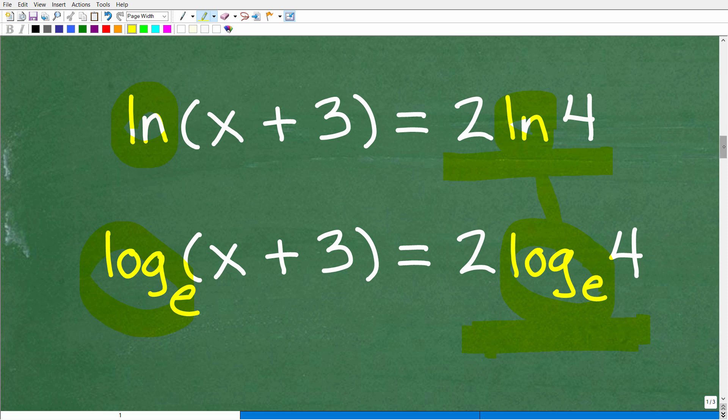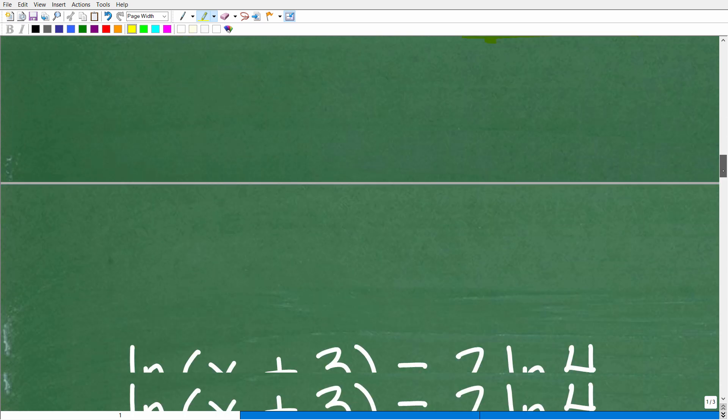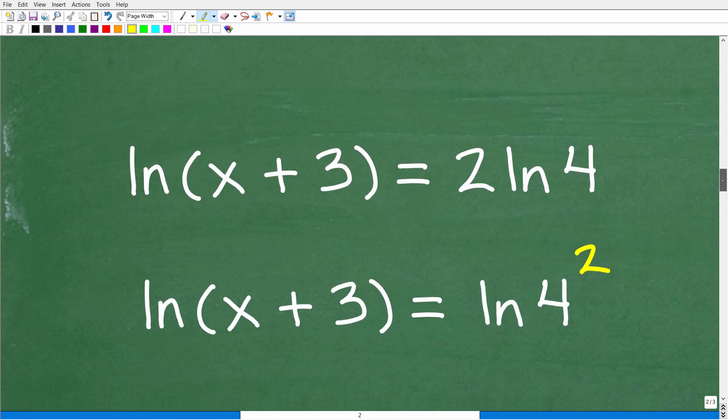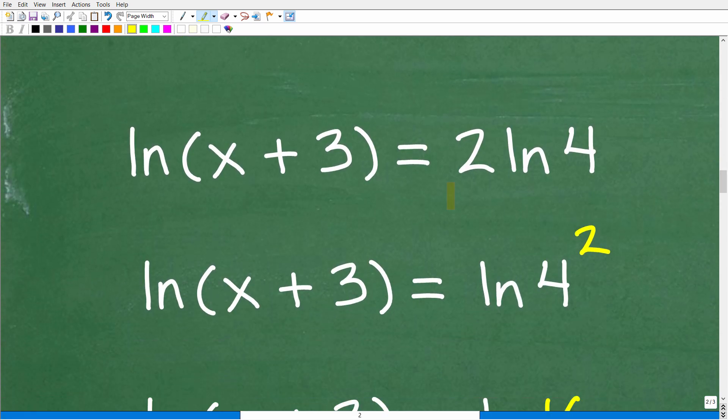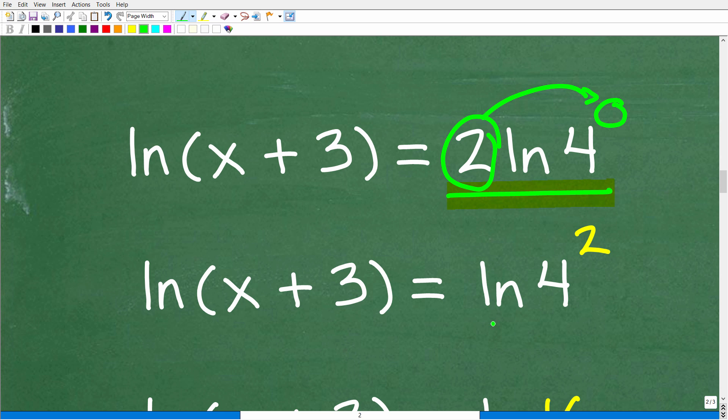Okay, so what you do need to know is your properties of logarithms. So here we have this expression right here, 2ln4. So this is a product. This is 2 times ln4. And we have a rule or a property of logarithms that allows us to take this 2 in this product and move it up here on this 4 as an exponent. So instead of 2ln4, we can write this expression as ln(4²).